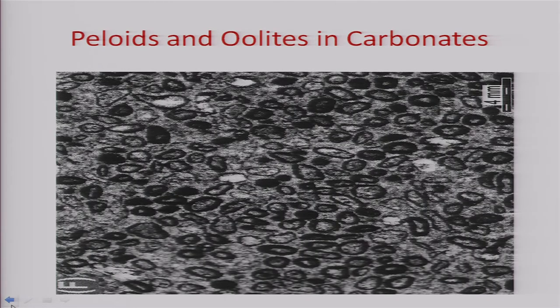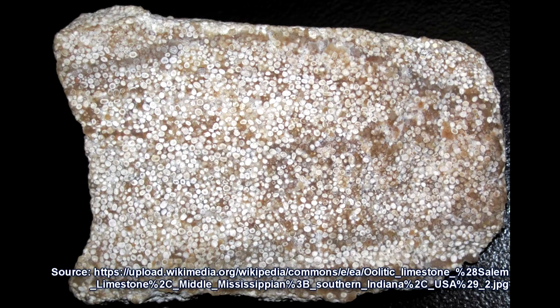Another structure found in shallow water regions is called peloids and ooids in carbonate. These are rounded oolitic rocks formed by sedimentary processes in carbonate rock by redeposition into a carbonate matrix. Depending on shape, they are given names: if rounded, they are called ooids; if slightly elongated or oval, they are called peloids; and if irregular and structureless, they are called pellets.